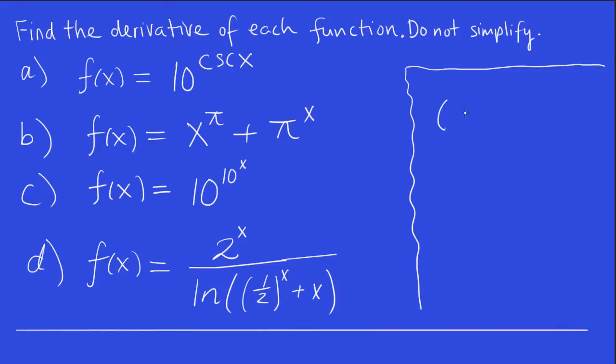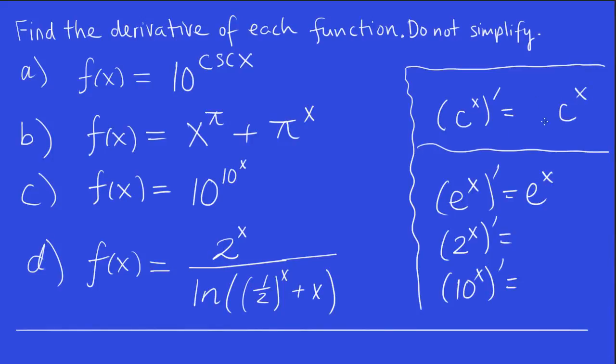So it might be worthwhile just to take a second and make sure you remember this very important formula, that the derivative of c to the x is... well, we remember that the derivative of e to the x is e to the x, but e is a specific number. So what would the derivative of 2 to the x be? Or what would the derivative of 10 to the x be? This is where this formula comes in.